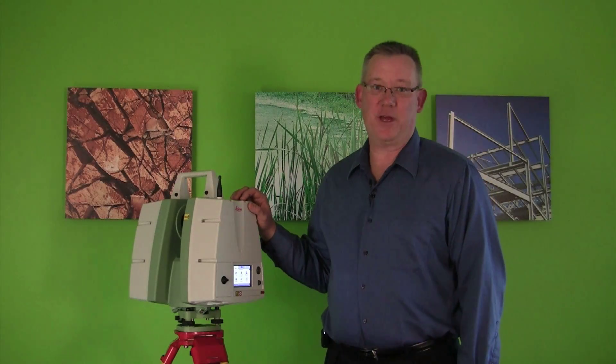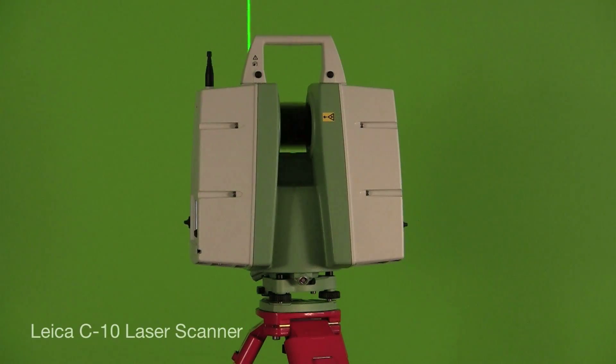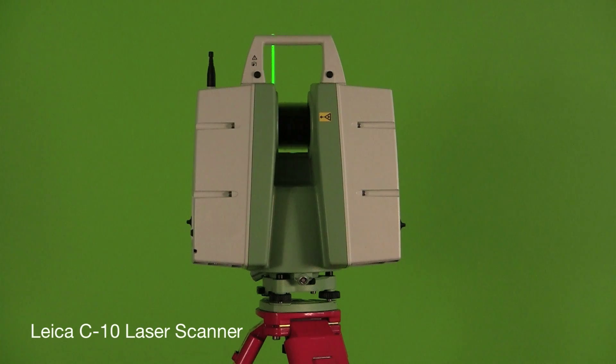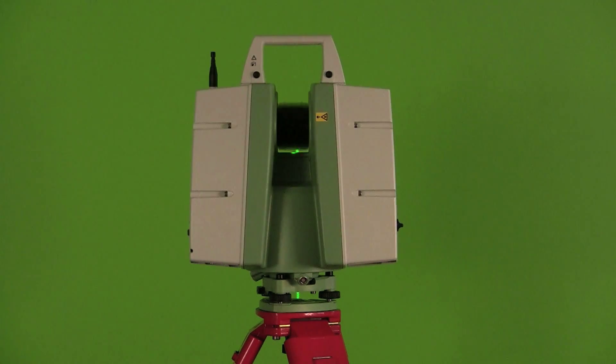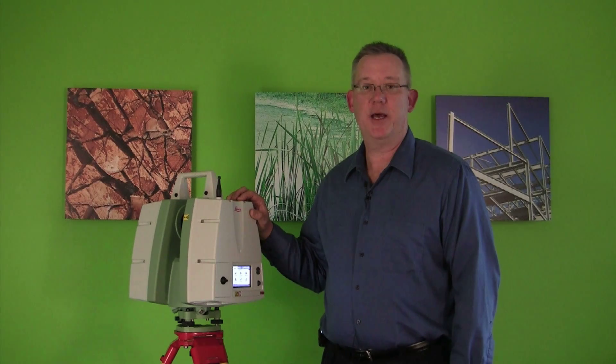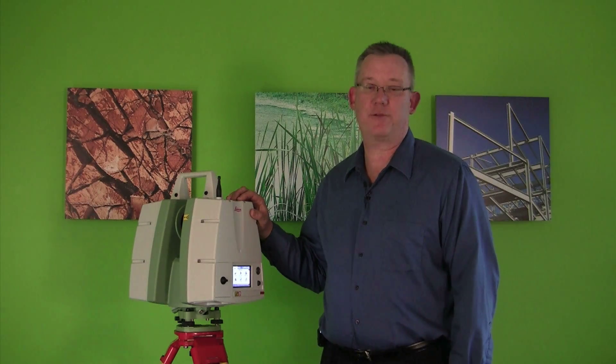The instrument emits a laser beam with a known wavelength, which bounces off a surface and returns to the instrument. By correlating time and wavelength, the instrument is able to create X, Y, and Z coordinates on the surface.